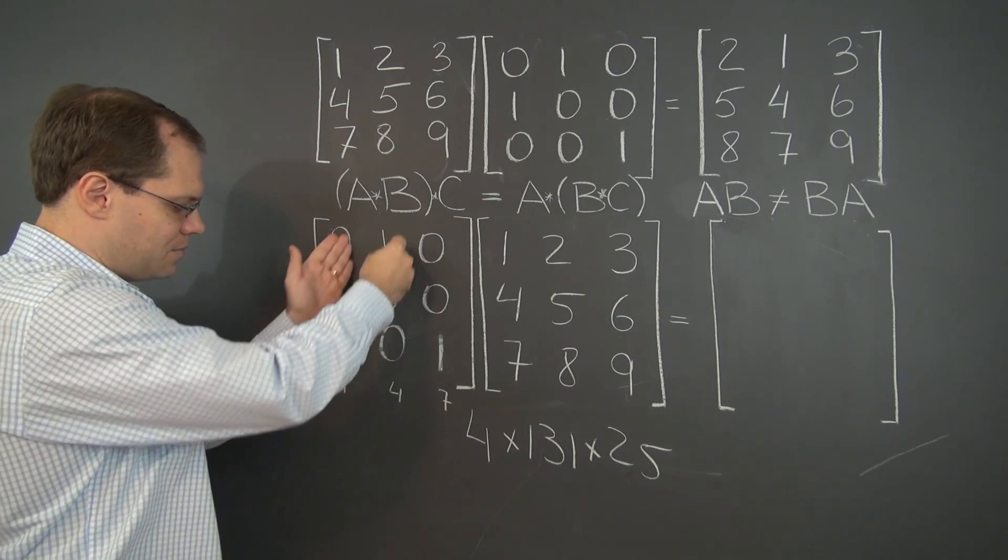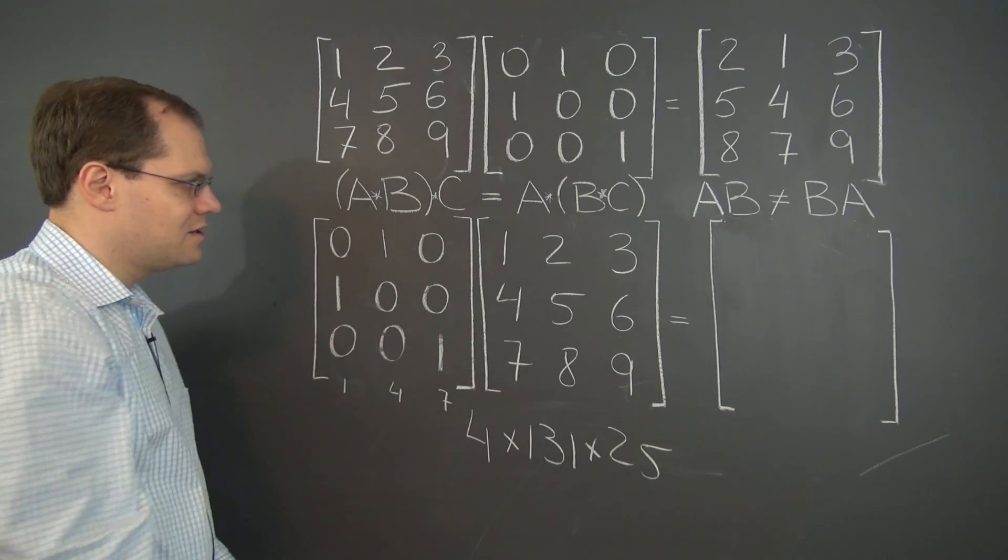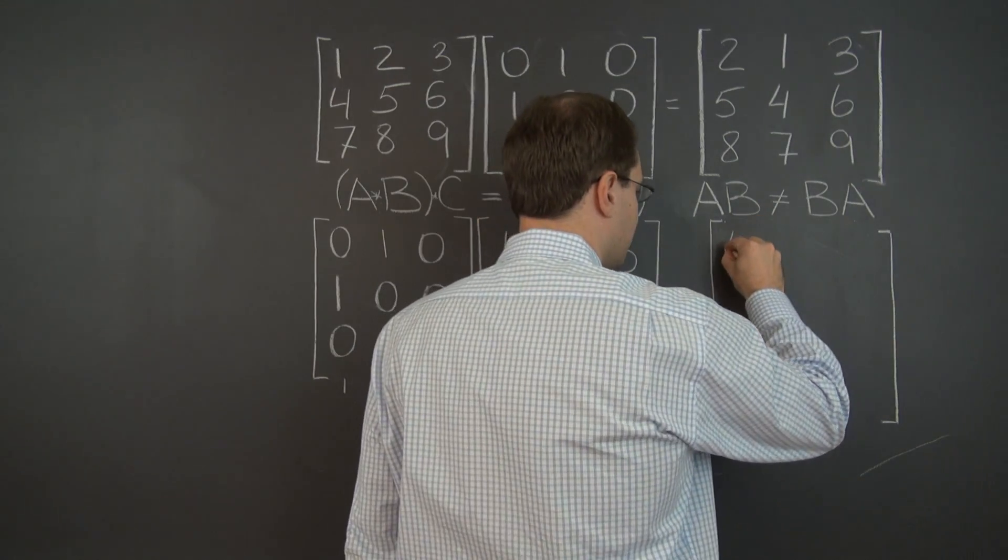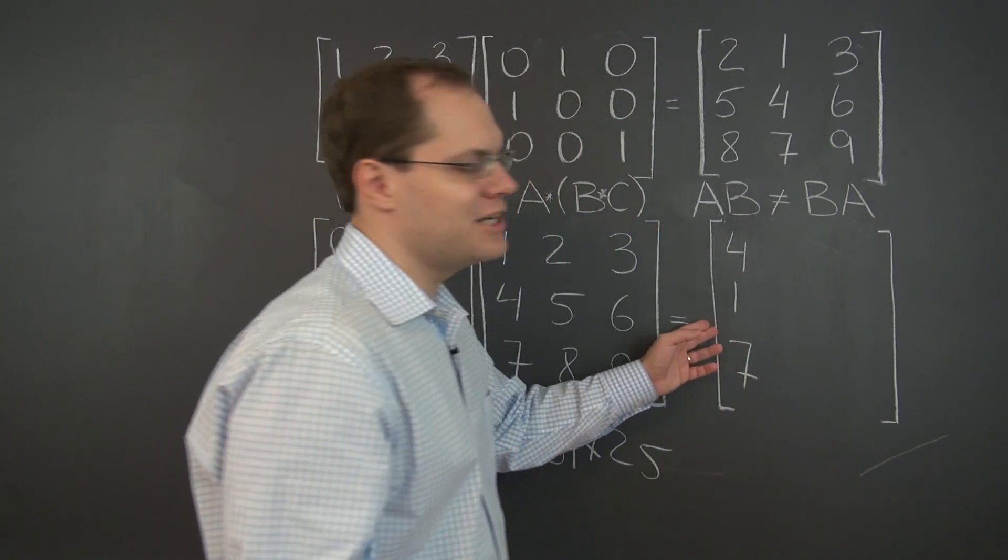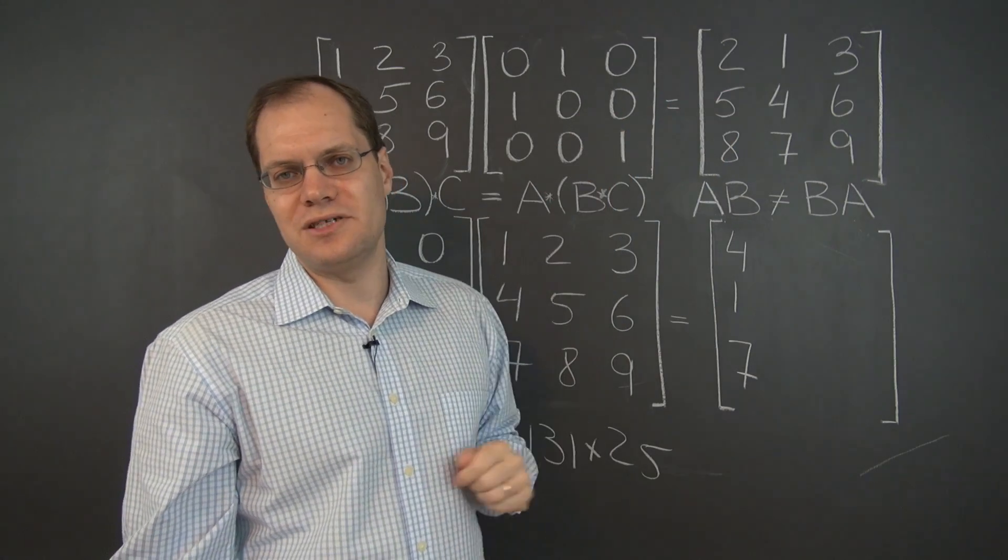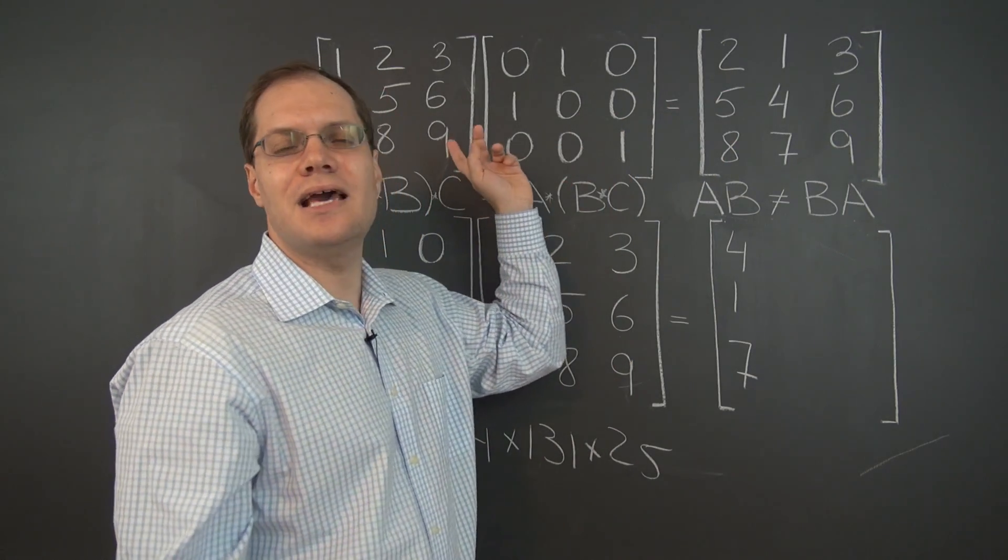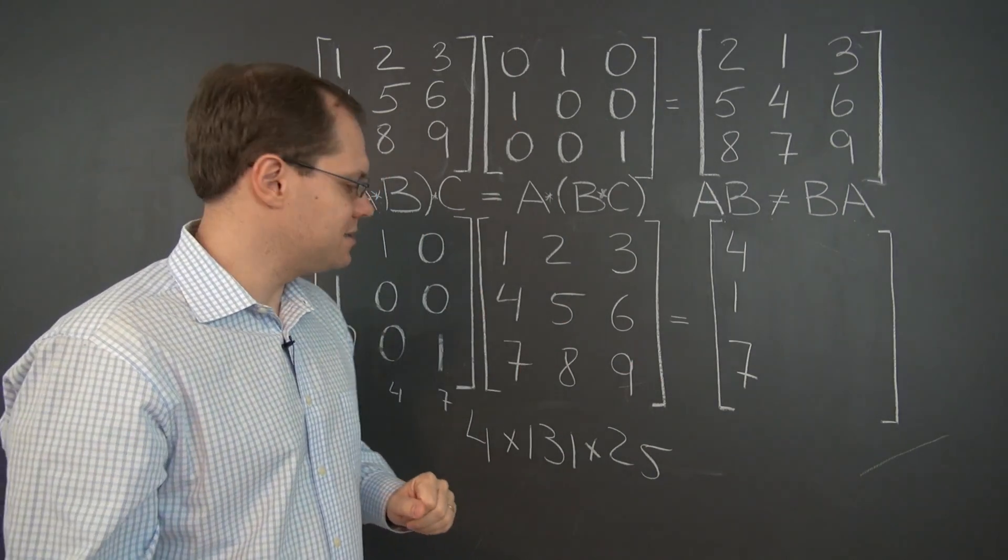One of this column, four of this column, seven of this column. So it's four, one, seven. We right away see that we're just not going to get the same matrix as before when we multiply the same two matrices but in the opposite order. Let's complete this example anyway.